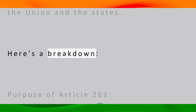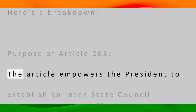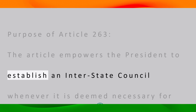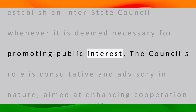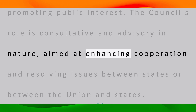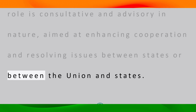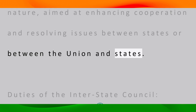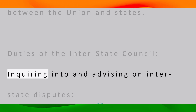The article empowers the President to establish an Interstate Council whenever it is deemed necessary for promoting public interest. The council's role is consultative and advisory in nature, aimed at enhancing cooperation and resolving issues between states or between the union and states.